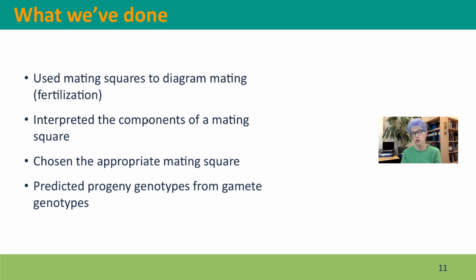Then the mating square tells you what offspring you will get from the gametes. We've worked at choosing the right mating square and at then predicting progeny genotypes from the gamete genotypes.